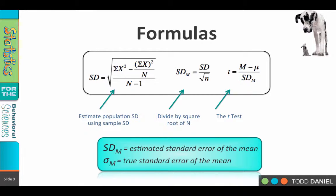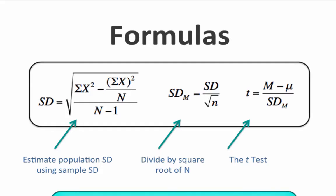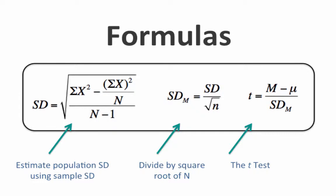Let's take a closer look at the formulas we will need for this t-test. First, we need to calculate the standard deviation of our sample using n minus 1 in the denominator, so we use this formula that we learned back in the chapter where we talked about variability. This is the standard deviation formula.